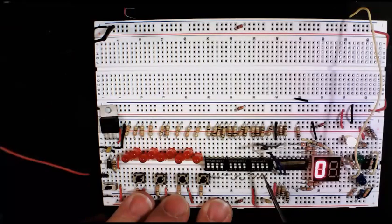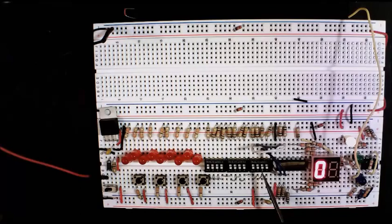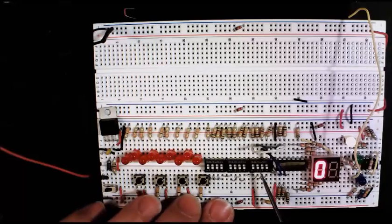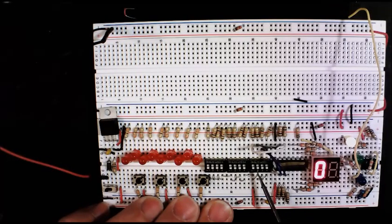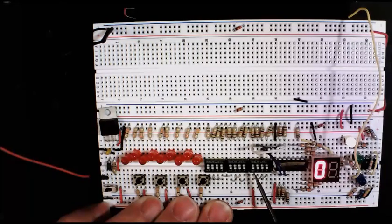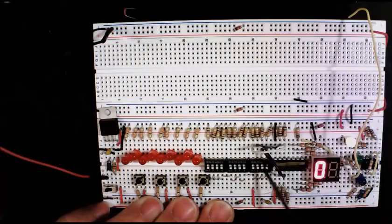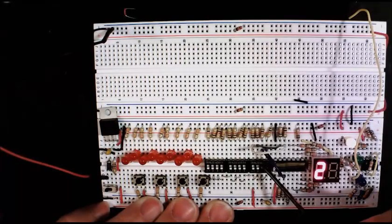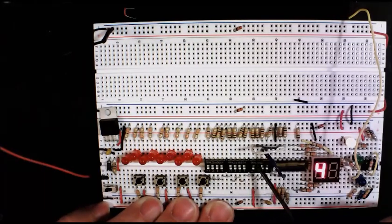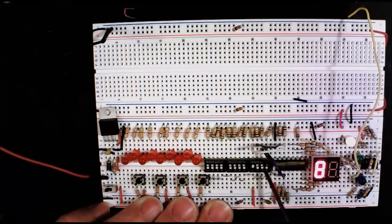When you turn the first one, this is going to give you one. So the next position here is two to the one, which means two. This here is two to the two, which is two times two, which is four. And this here is two to the third, which is two times two times two, which is eight. So to demonstrate, we have one, two, four, and eight.